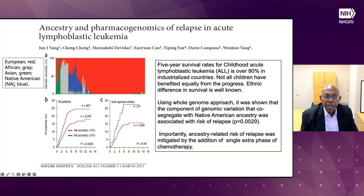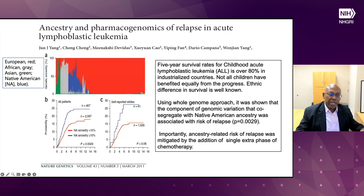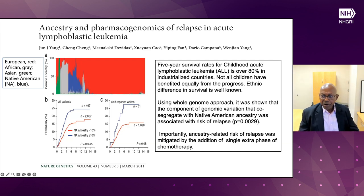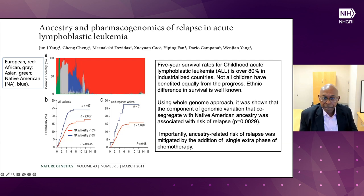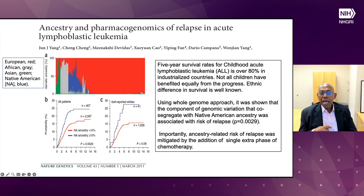The same applies to leukemia in the context of Native American ancestry. This was a study published in 2011 — this is not to label any group as carrying a disease variant; I always say we are all mutants in our own way. But what this shows is that people who carry a lot of Native American ancestry, for this specific condition, tend to have a higher rate of relapse for leukemia — a phenomenon physicians had seen for a long time but were not able to explain. By recognizing this and adding an additional dose of chemotherapy, you can actually address this increased relapse. Very important.